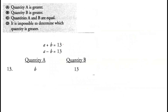Question 13: a plus b equals 13 and a minus b equals 13. Find b. Subtracting the equations, the a terms cancel, giving 2b equals 0, so b equals 0. Since 13 is greater than 0, quantity B is greater than quantity A. Option B is correct.